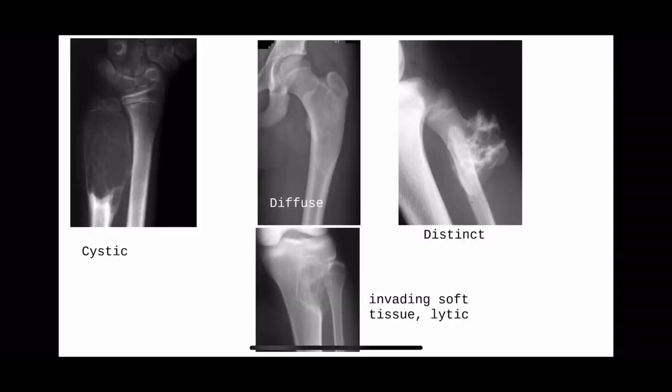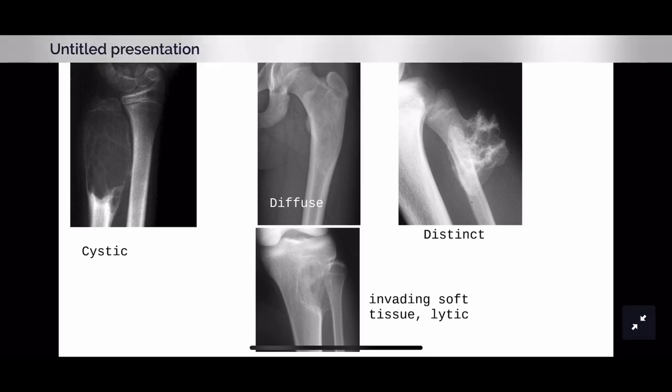Some more examples. This cystic lesion is not in the epiphysis and looks ballooned out — must be ABC, aneurysmal bone cyst. This is a diffuse lesion — first word: diffuse — should be Paget's disease or fibrous dysplasia. It is altering the shape, going into a shepherd's crook deformity of the proximal femur — so it has to be fibrous dysplasia, not Paget's disease. This is a distinct lesion — osteochondroma, because you can see it is arising from the bone.